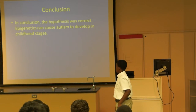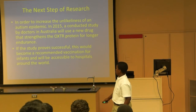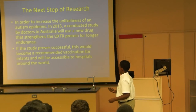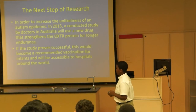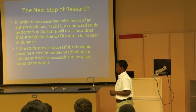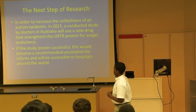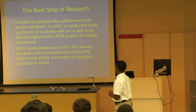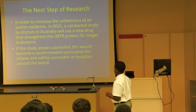In conclusion, my hypothesis is correct that epigenetics may cause autism to develop in the childhood stages. The next step of research: in 2015, a conducted study will be performed by doctors in Australia using a new drug. If successful, it would become a recommended vaccination for infants and serve as a possible preventive example.